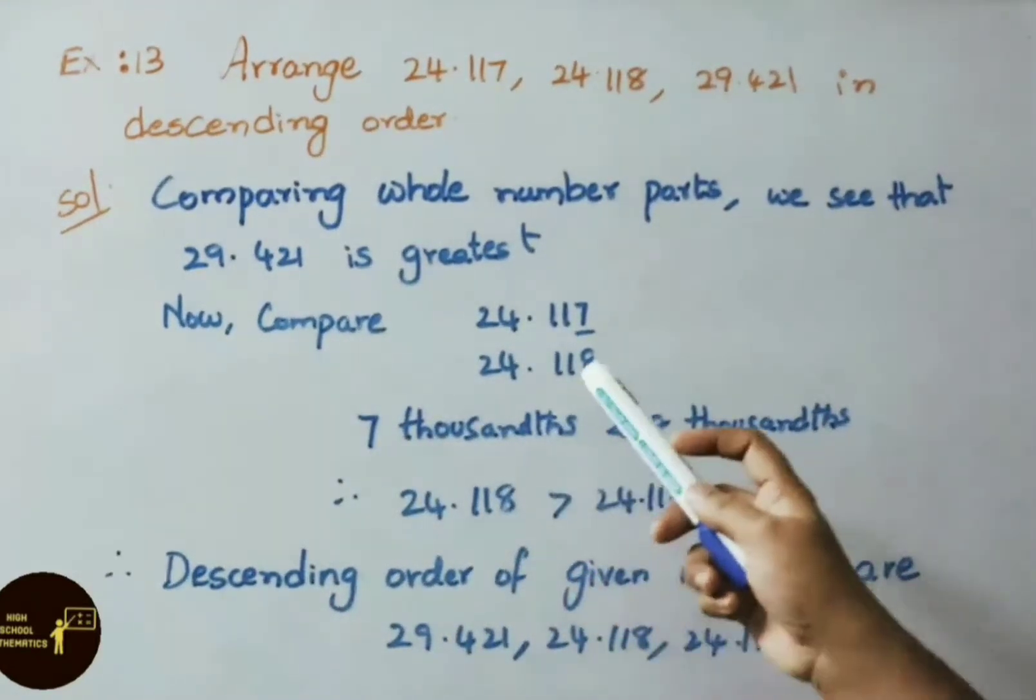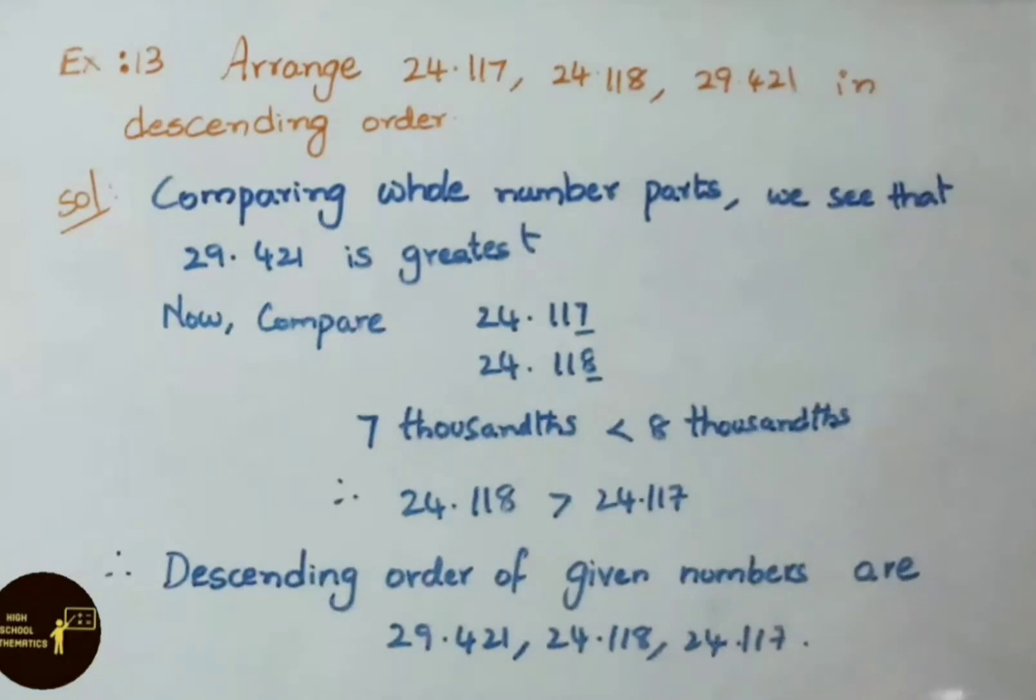Tens, ones place, tenth, hundredth were same. Only thousandth place is different. So we compare them. Seven thousandths is less than eight thousandths. Therefore, 24.118 is greater than 24.117.